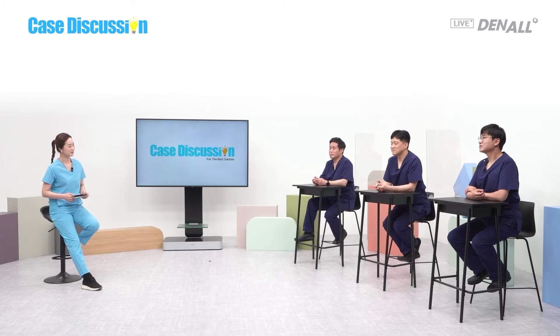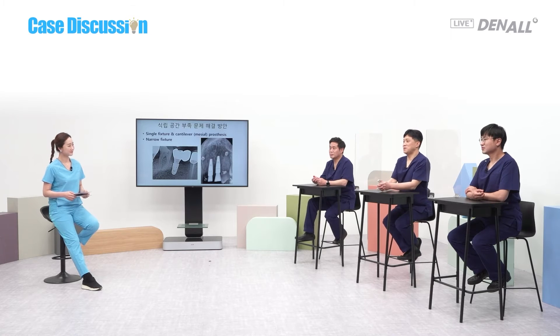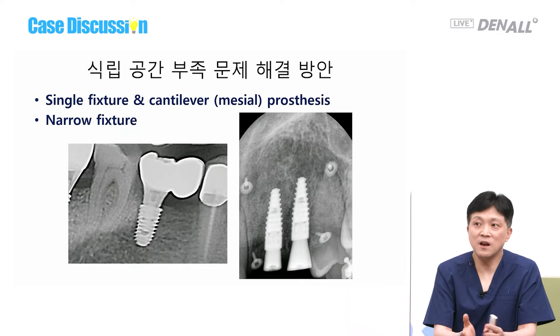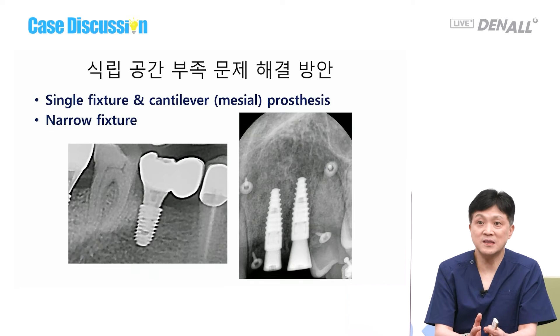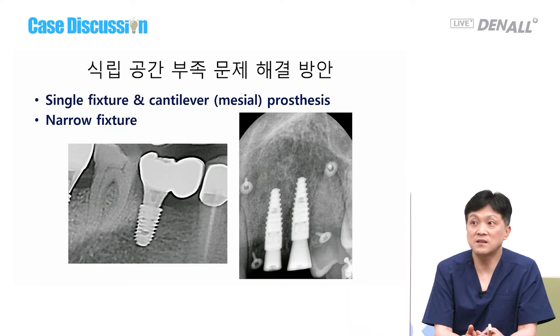Dr. Son Yong-hui, would you like to go first? Yes, this is a common case. In order to resolve the narrow space mesiodistally, a single fixture with cantilever prosthesis is the easiest and very stable solution when two cannot be done. However, if the bite force is too strong, that needs to be considered for the cantilever. The second option is using narrow fixtures, and several factors must be considered.